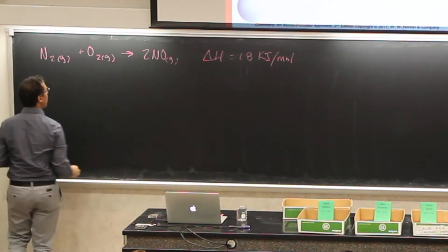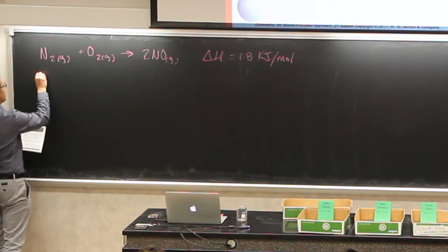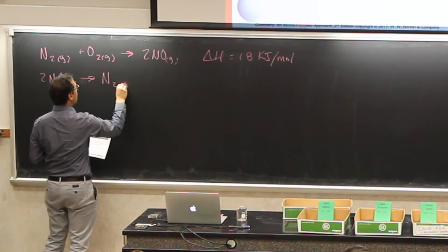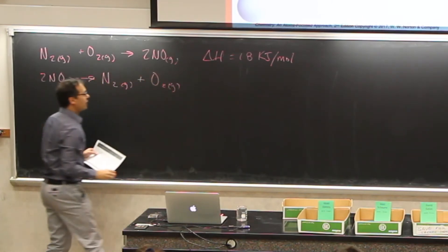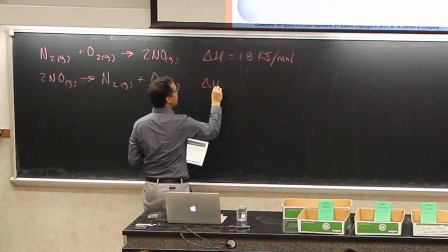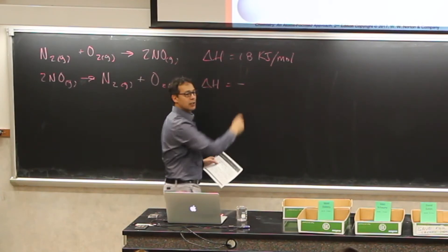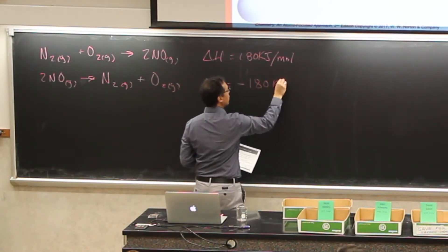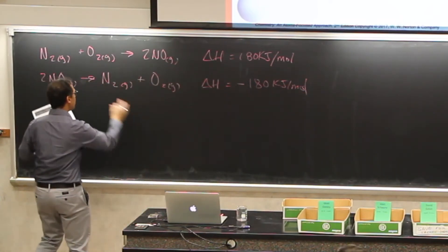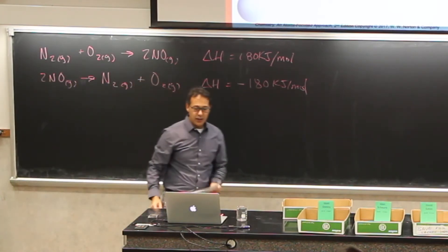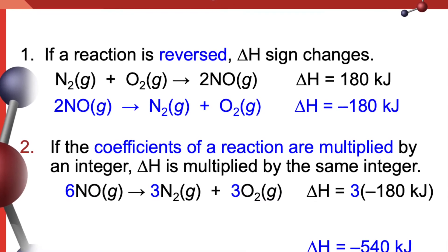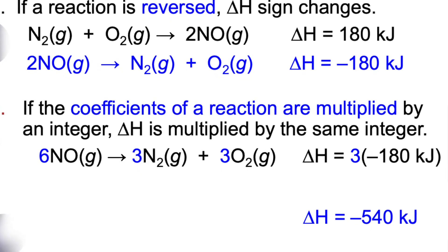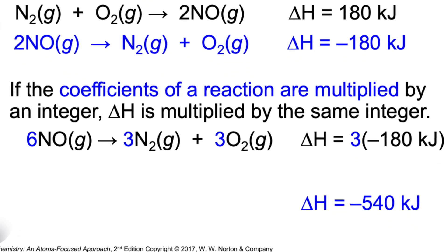If we reverse this reaction — that is, flip-flop the reactants and products — we'd have two nitrogen monoxides giving us nitrogen gas plus oxygen gas. When we do that, we need to reverse the sign, so this delta H becomes negative 180 kilojoules per mole. The other rule is: if you multiply an equation by some number — in this case, by three — you multiply everything by three, including the amount of energy. So if you multiply an equation by some number, you must multiply the enthalpy by that same number.